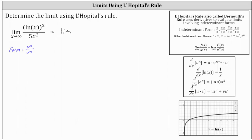We have the limit as x approaches infinity. To differentiate the square of natural log x, we need to apply the power rule with the chain rule, where the inner function is natural log x. The derivative of the square of natural log x is equal to 2 times natural log x to the power of 1, times the derivative of natural log x, which is 1 divided by x. Then we divide by the derivative of 5x squared, which is 10x.